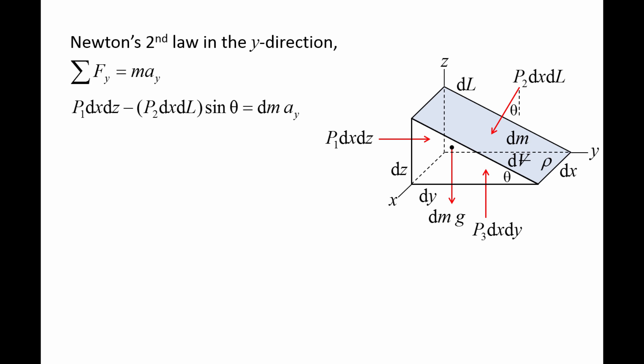Substituting the values for forces and mass, we get p1 times dx dz minus the y component of the pressure force on the top face, which is p2 times dx dl sin theta, equals dm times ay.